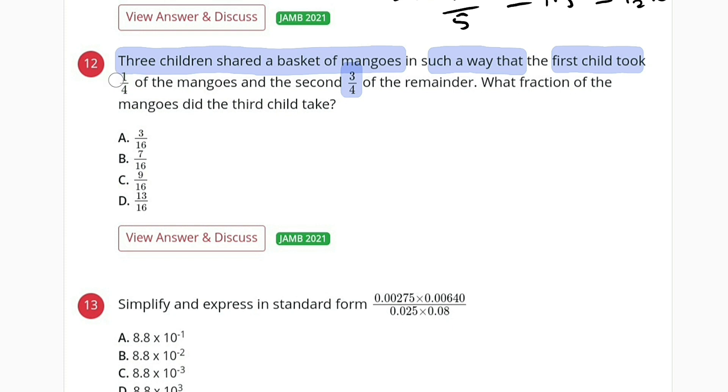Okay, since we don't know the number of mangoes, we can declare it with something else like x. So let me say that the total number of mangoes equals x. The first child has taken 1 over 4 of this total mangoes, which is 1 over 4 times x, which is x divided by 4.